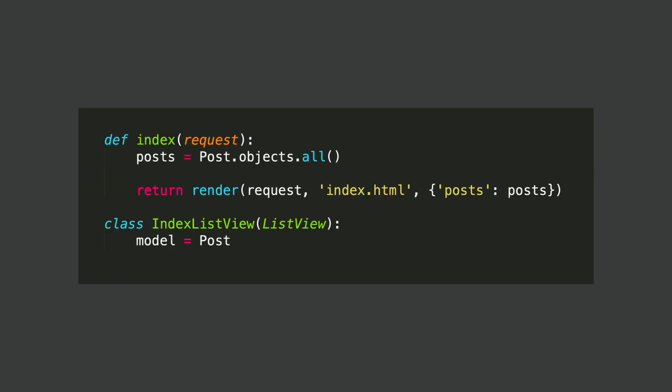Views. Here you have two different types of views. First, we have the function-based views, and then below the class-based views. In the function-based view, we take posts from the database by calling a model called Post and then get all of the objects. Then we render the request with the template and pass in the posts.